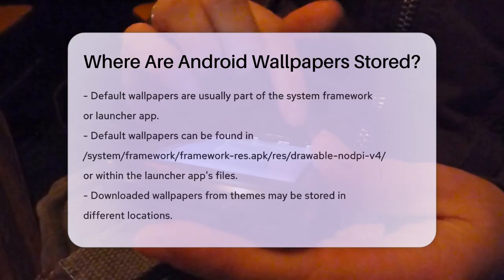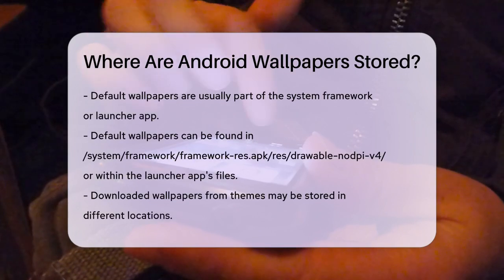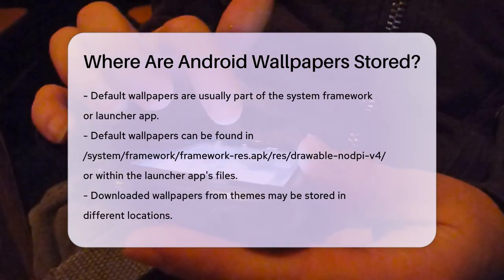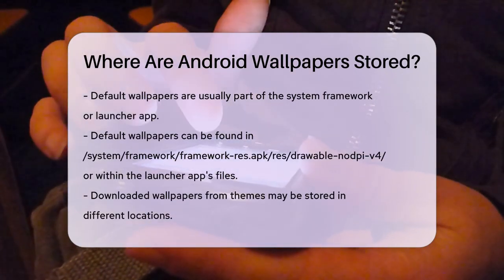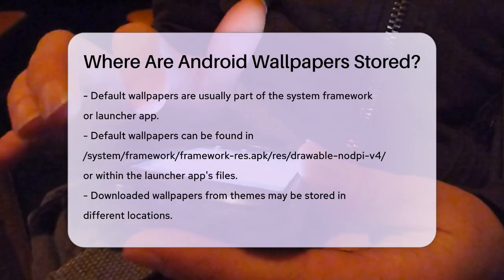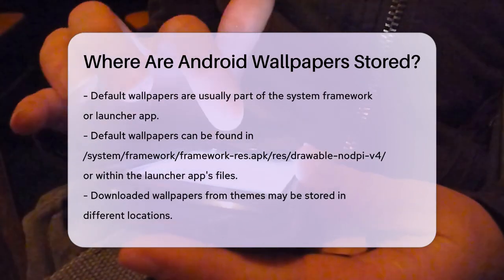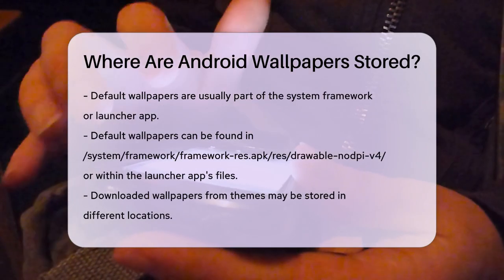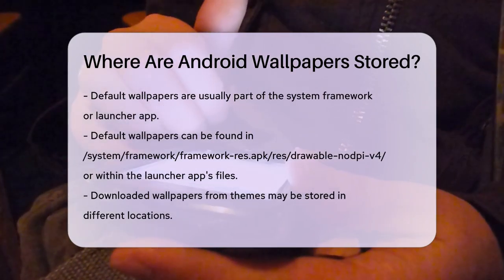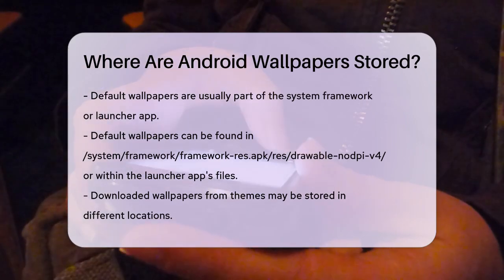For default wallpapers that come with the phone, they are often part of the system framework or the launcher app. You can find these in directories like /system/framework/framework-res.apk/drawable or within the launcher app's files in /system/app/.